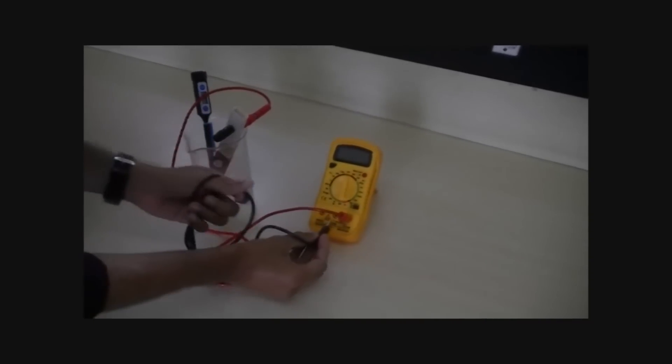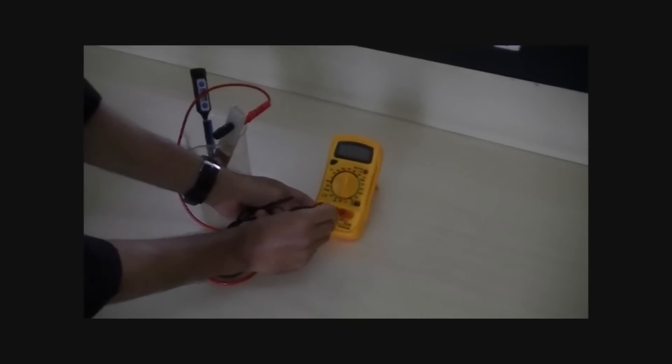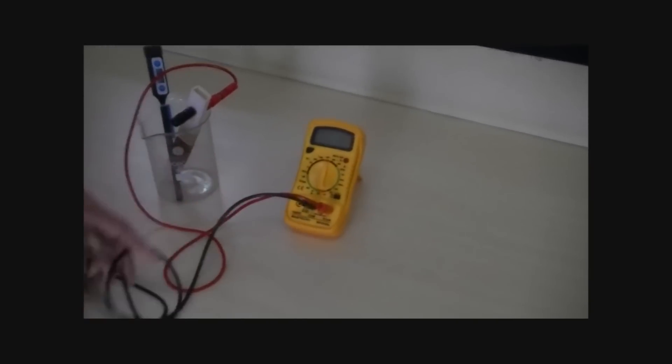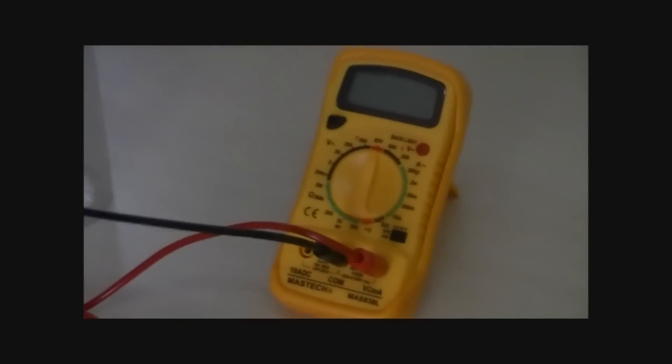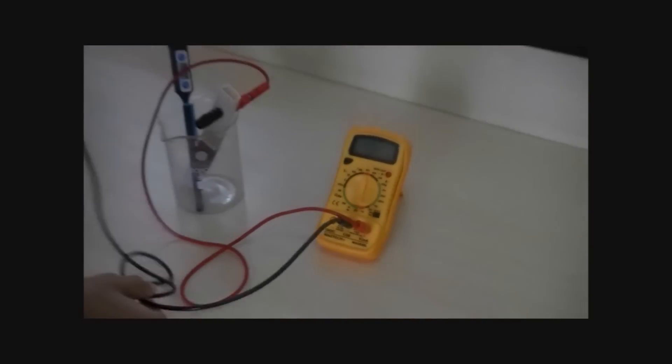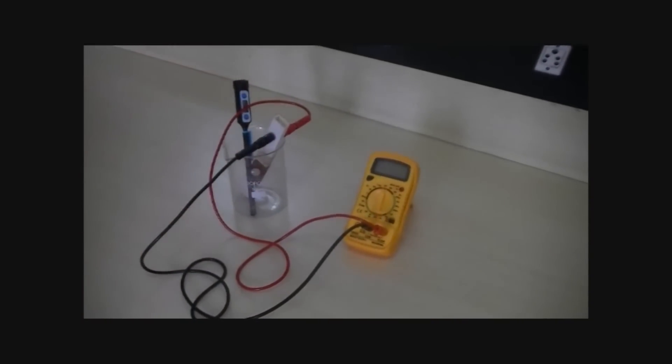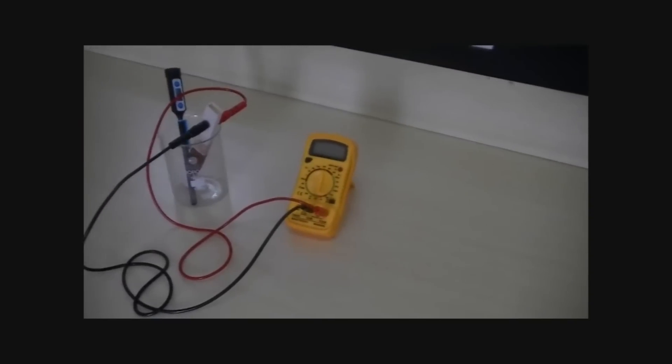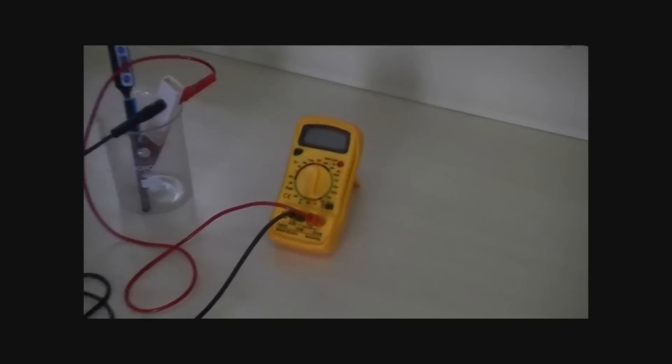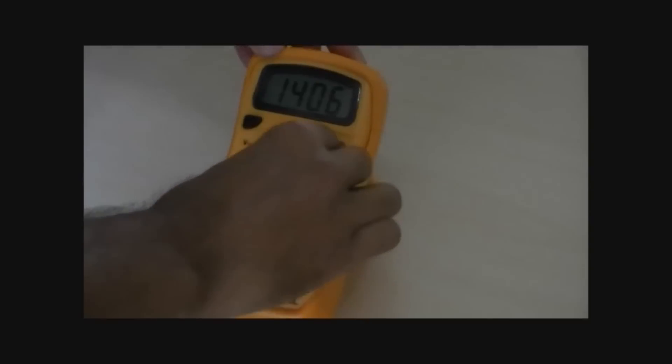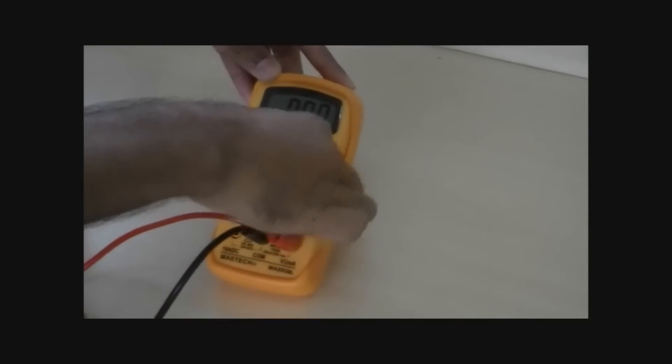Connect the common terminal of the multimeter to the next connecting wire. The other terminal of the connecting wire is connected to the copper coil. We will now adjust the multimeter to measure the resistance of the copper coil.